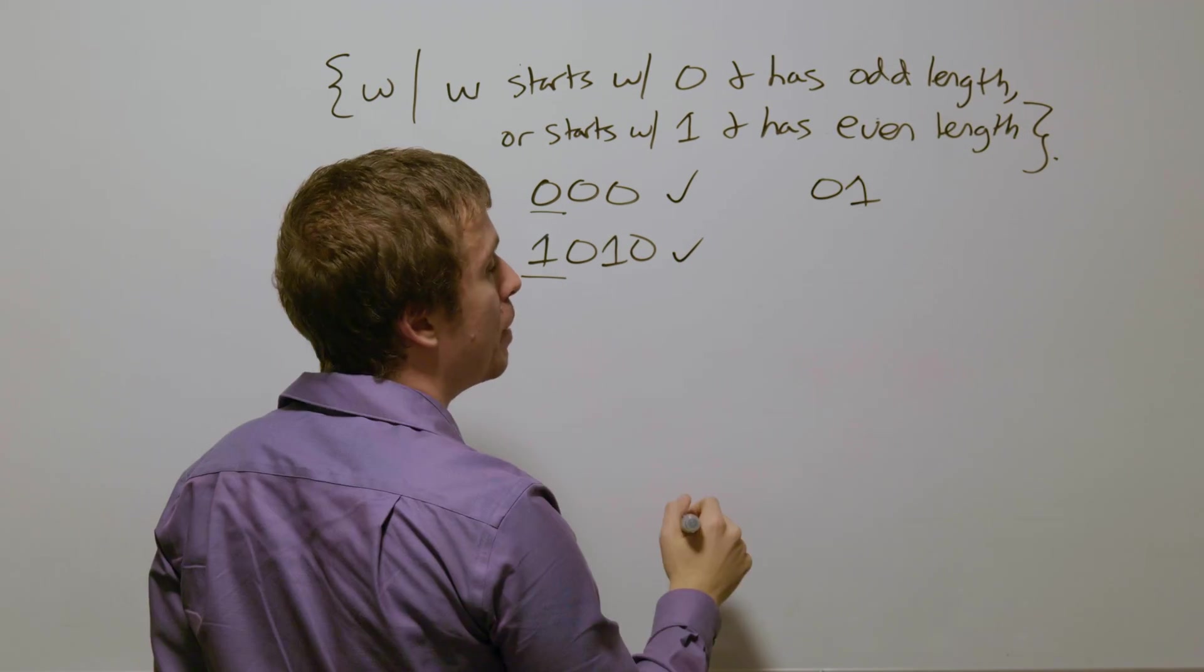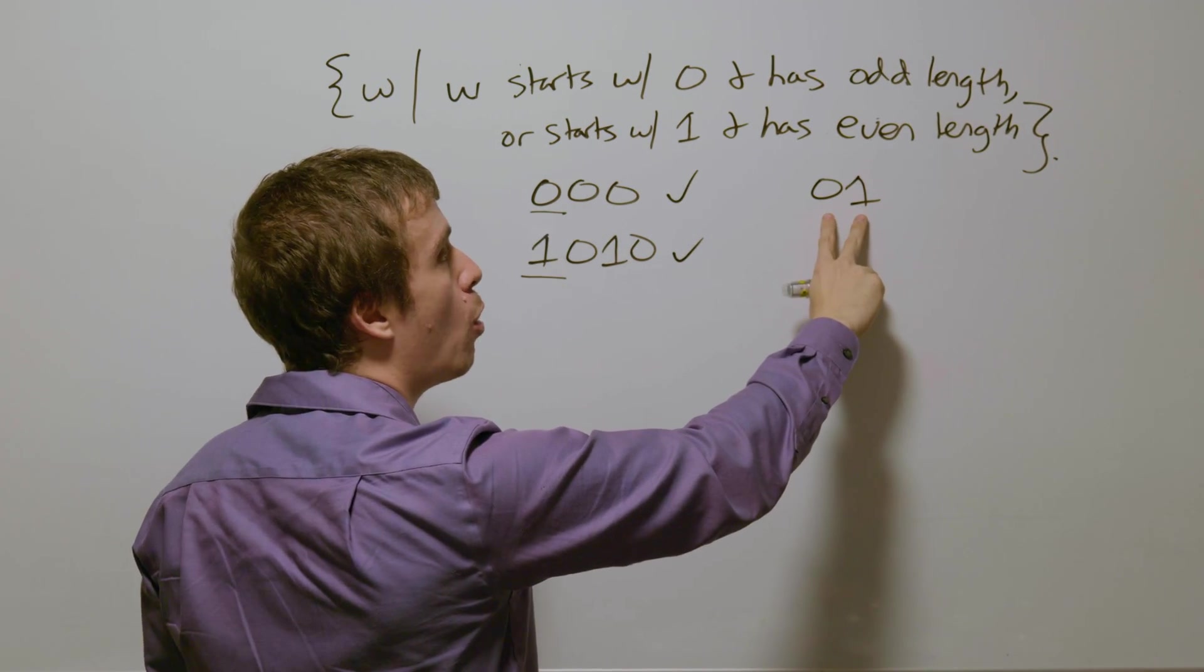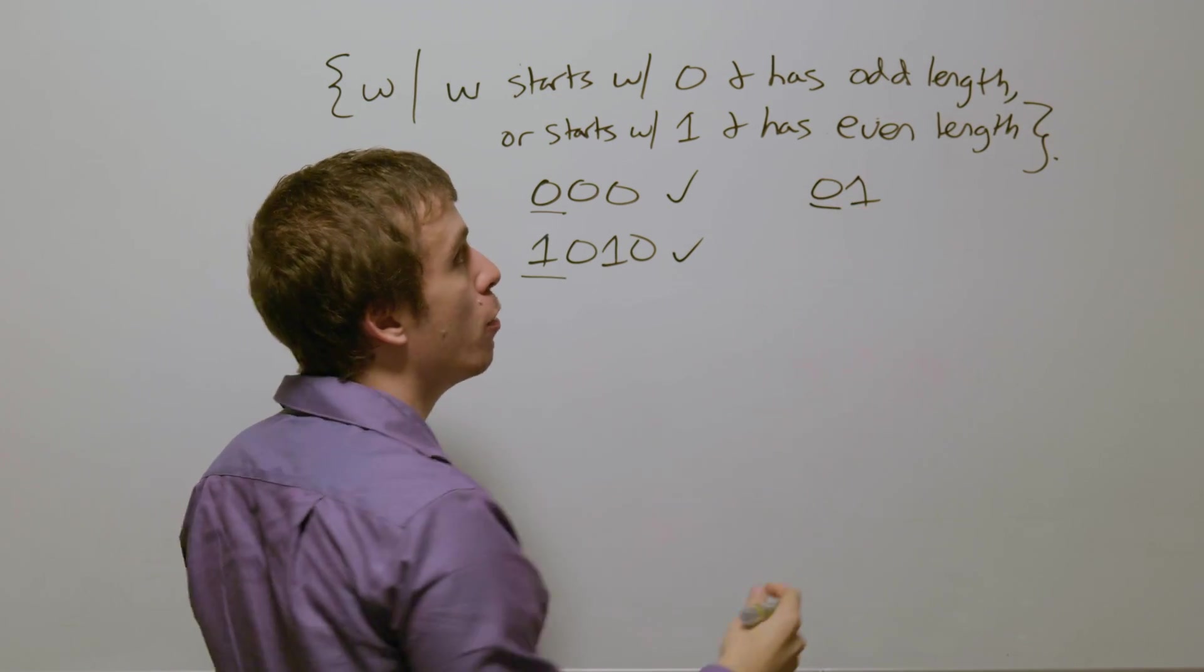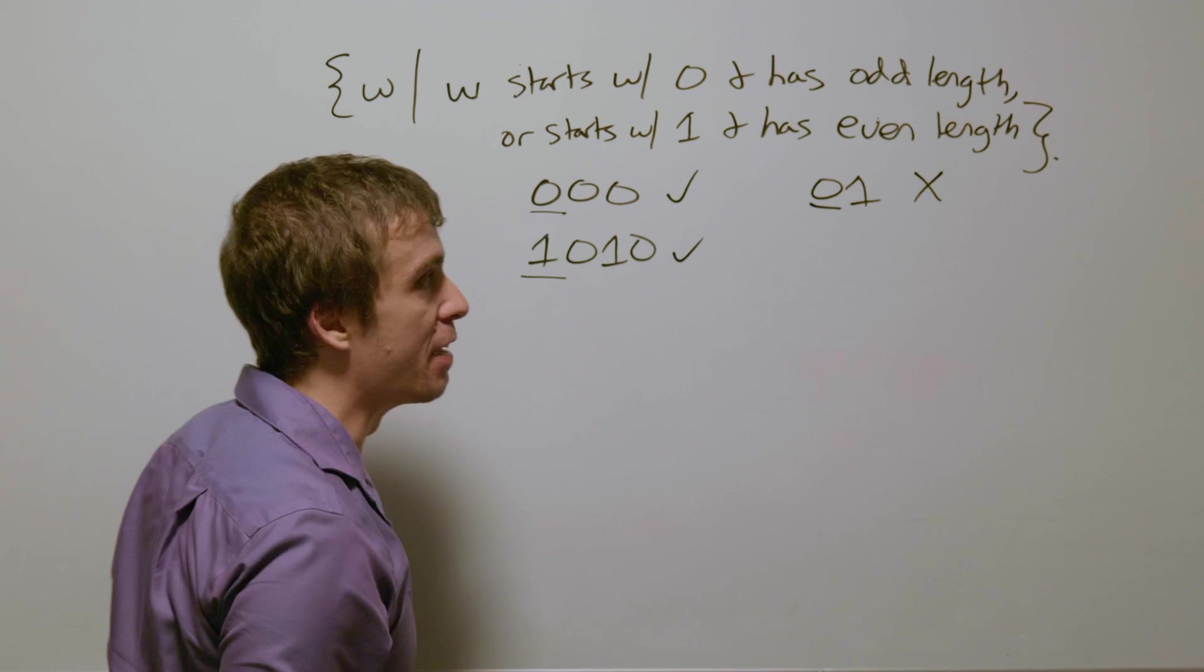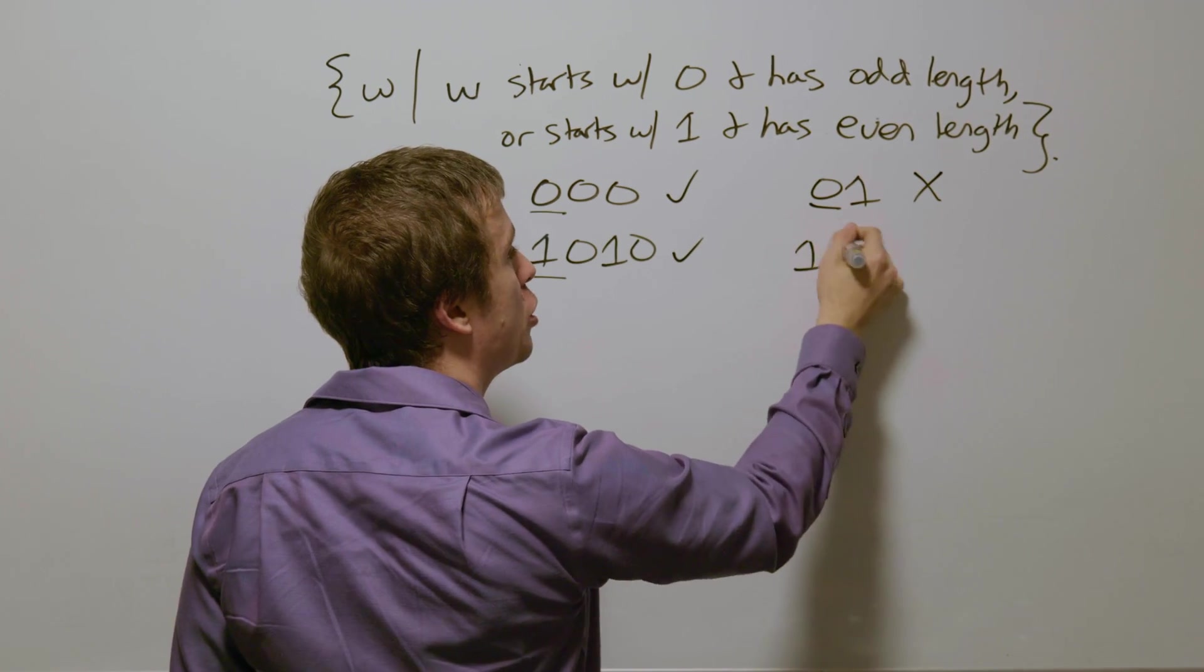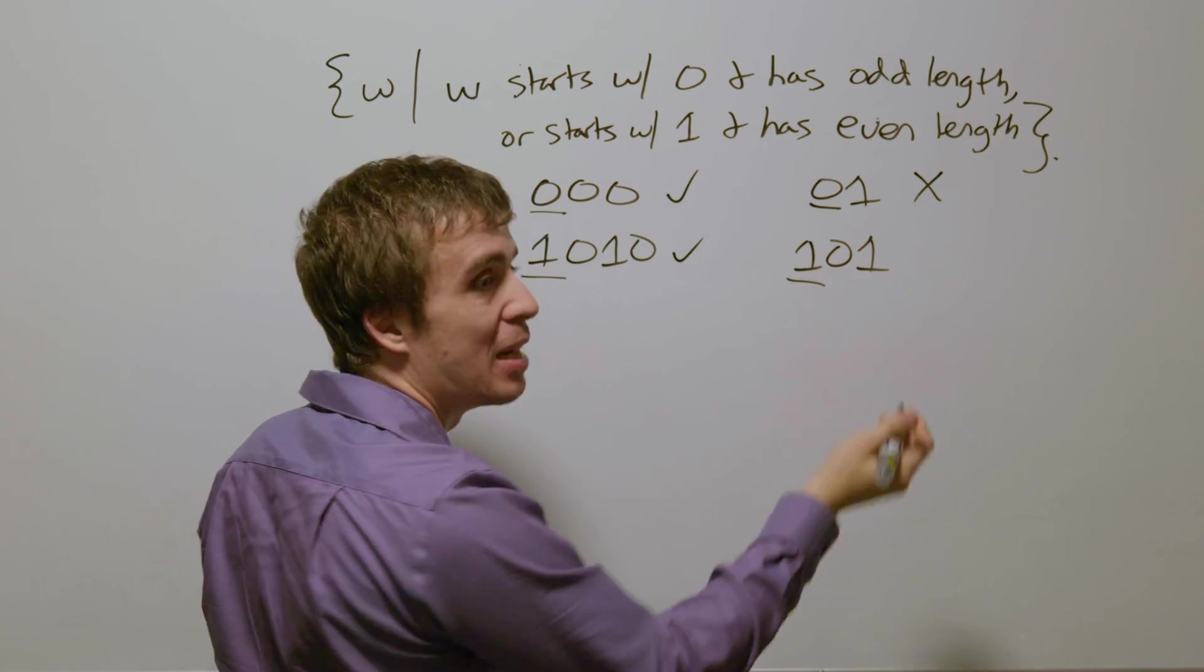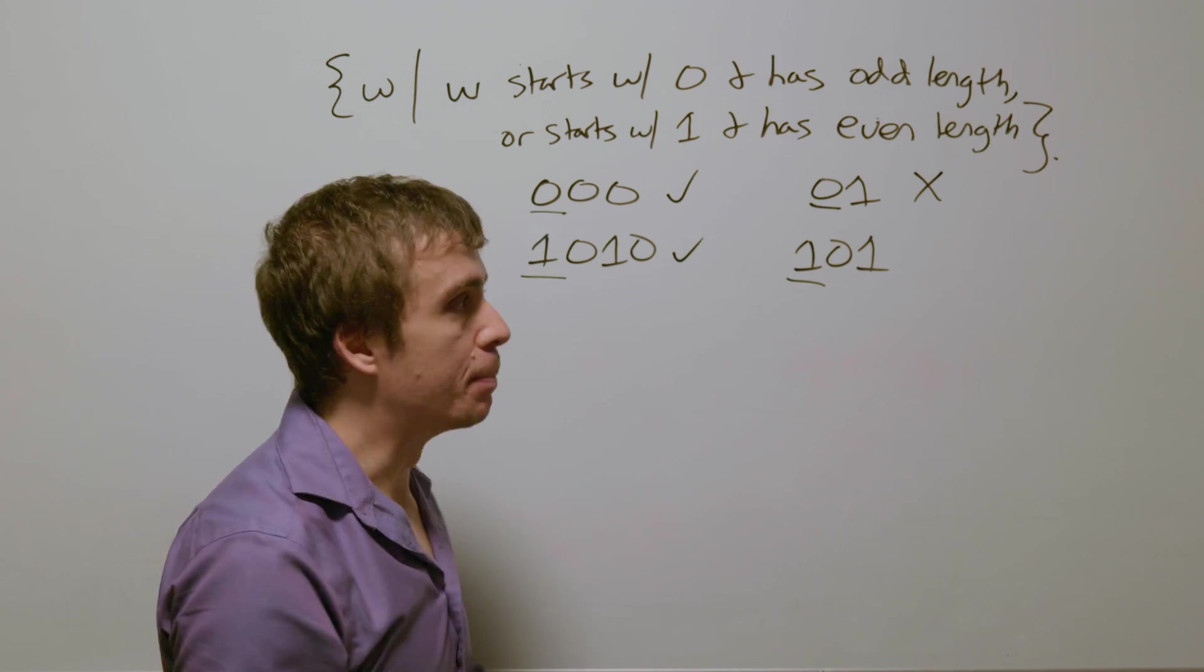So these two are okay, but suppose that we have the string 0, 1, it starts with a 0, it has even length, and so should not be accepted by our DFA. And likewise, if we just have 101, it starts with a 1, but it has odd length, and so it should not be accepted.